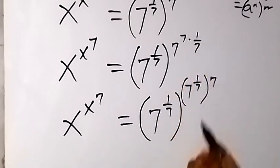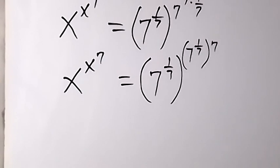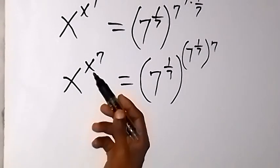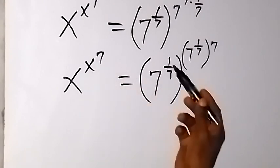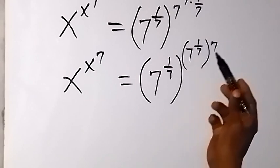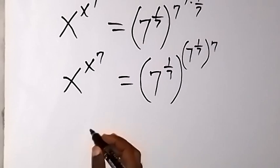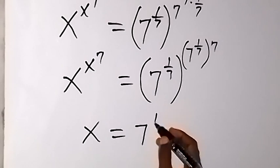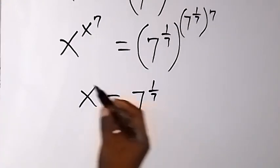So we brought 7 over 7 and took 1 over 7 inside. When we look at what we have critically, on the left we have x raised to power x, raised to power 7, and on the right we have 7 raised to power 1 over 7, raised to power 7. By comparison, we can conclude that x equals 7 raised to power 1 over 7.